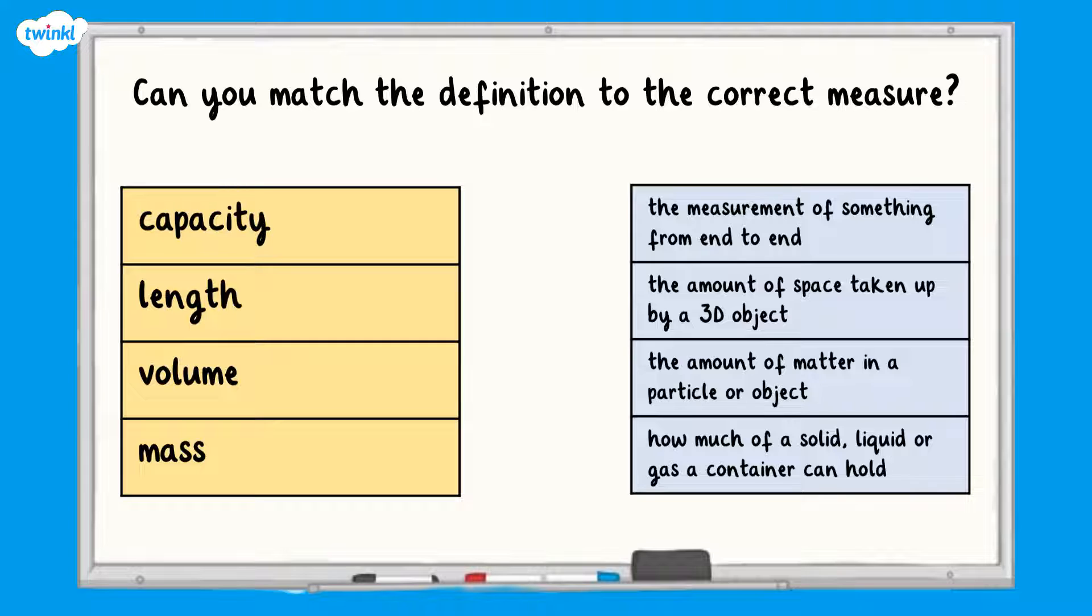All finished? Well done, let's take a look at the answers. The capacity is how much of a solid, liquid or gas a container can hold. Length is the measurement of something from end to end. Volume is the amount of space taken up by a 3D object and mass is the amount of matter in a particle or object.